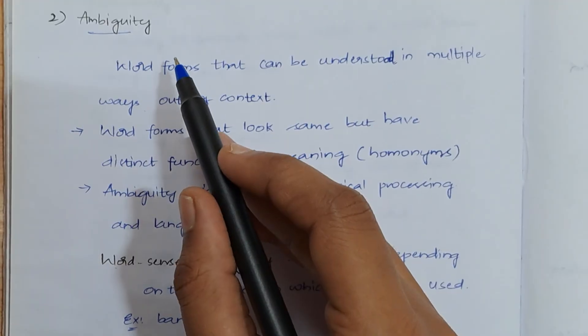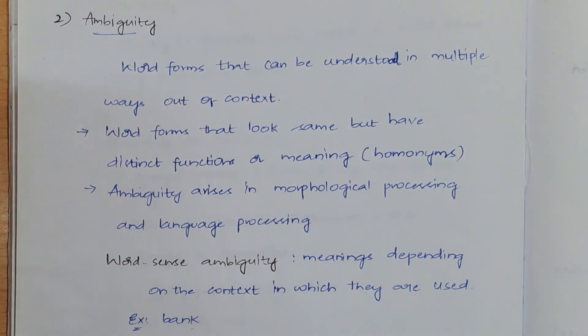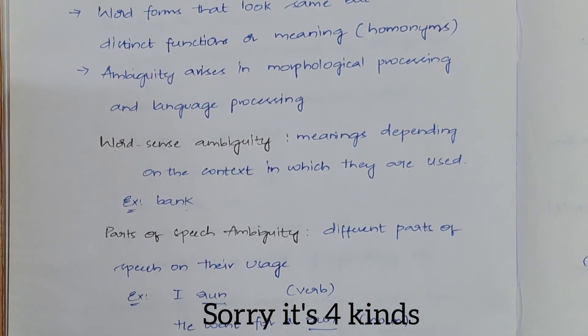The second issue or challenge is ambiguity. What is meant by ambiguity? Ambiguity is nothing but a word which is having multiple meanings. The spelling is the same, but it will be having different meanings for the same word. There are three kinds of ambiguities.